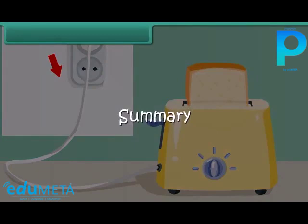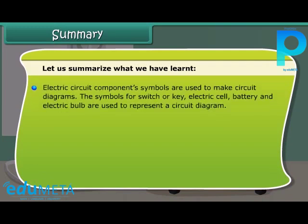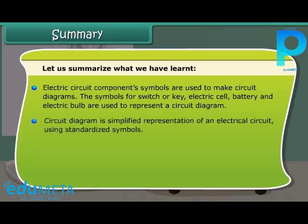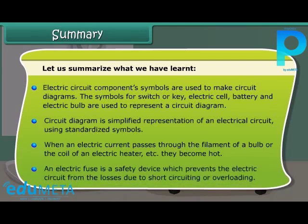Let us summarize what we have learned. Electric circuit component symbols are used to make circuit diagrams. The symbols for switch or key, electric cell, battery, and electric bulb are used to represent a circuit diagram. A circuit diagram is a simplified representation of an electrical circuit using standardized symbols. When an electric current passes through the filament of a bulb or the coil of an electrical heater, they become hot. An electric fuse is a safety device which prevents the electric circuit from losses due to short circuiting or overloading.